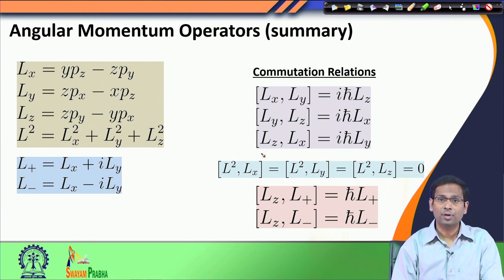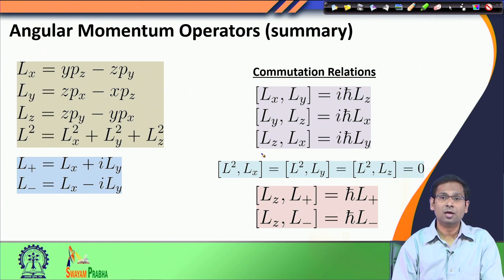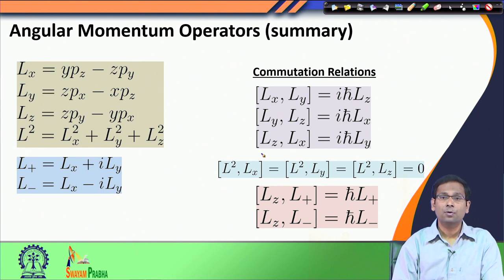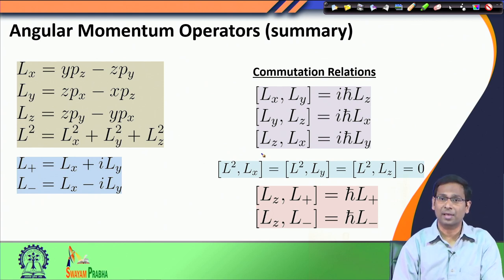On the other hand, we have the L_square operator which commutes with L_x, L_y, and L_z. Therefore, we can define a common complete set of eigenfunctions for L_square and any one of these three operators L_x, L_y, and L_z. We continued our discussion by deciding to find the eigenfunctions which are simultaneously eigenfunctions of the L_square operator and the L_z operator.